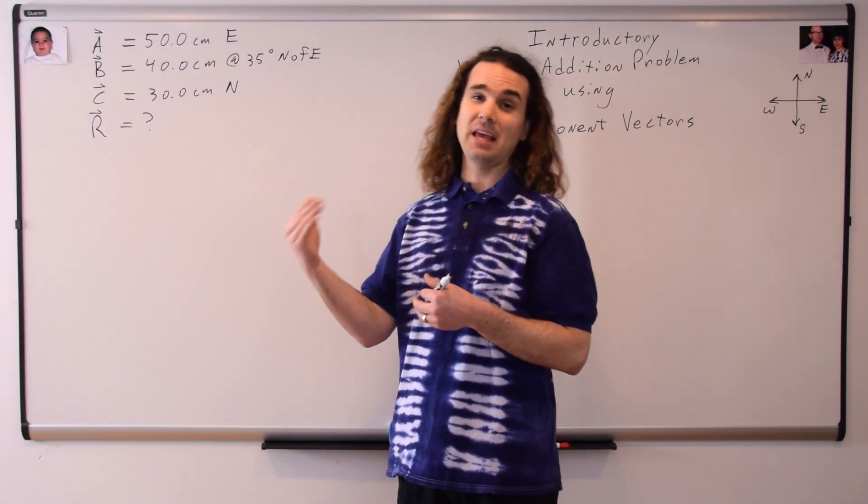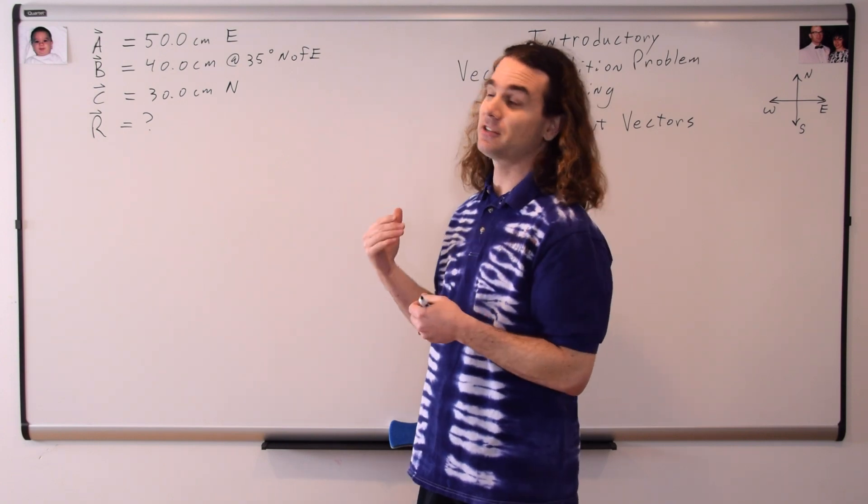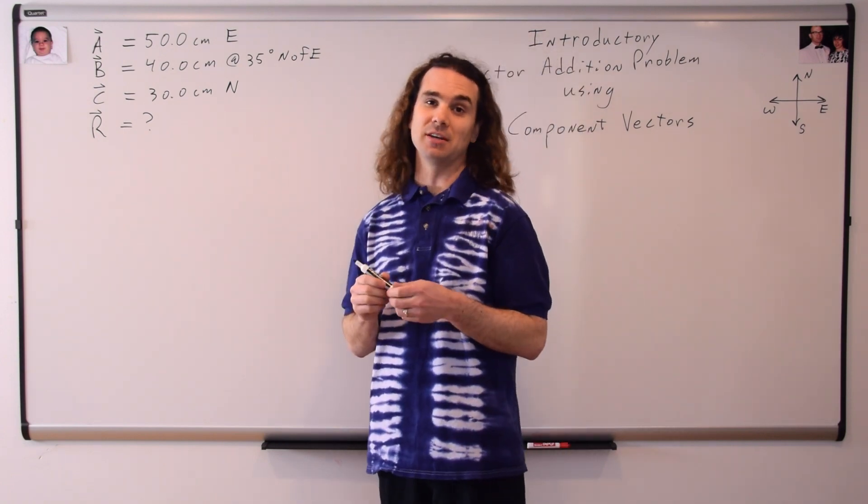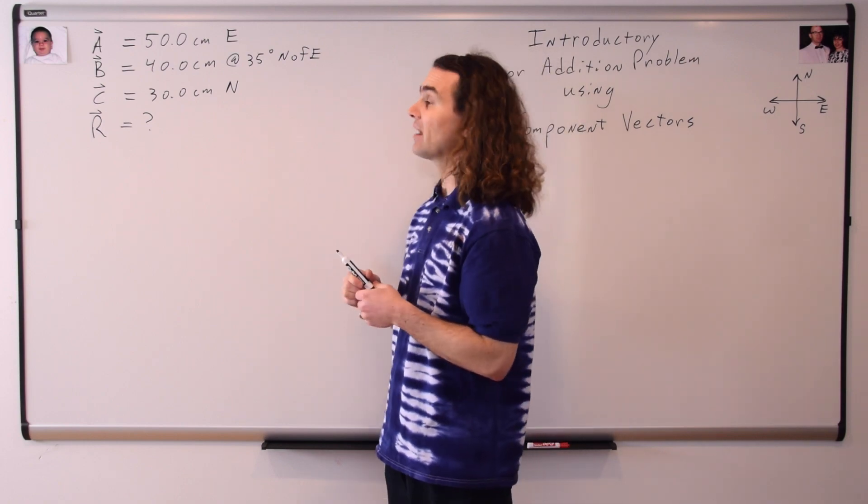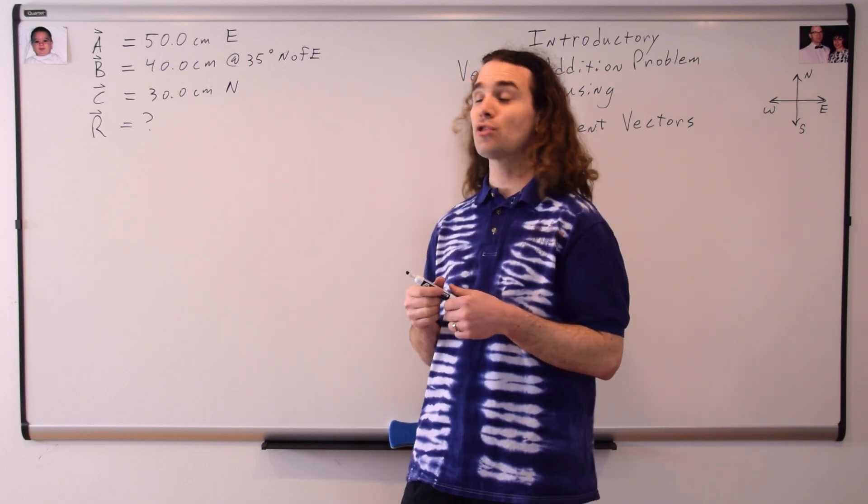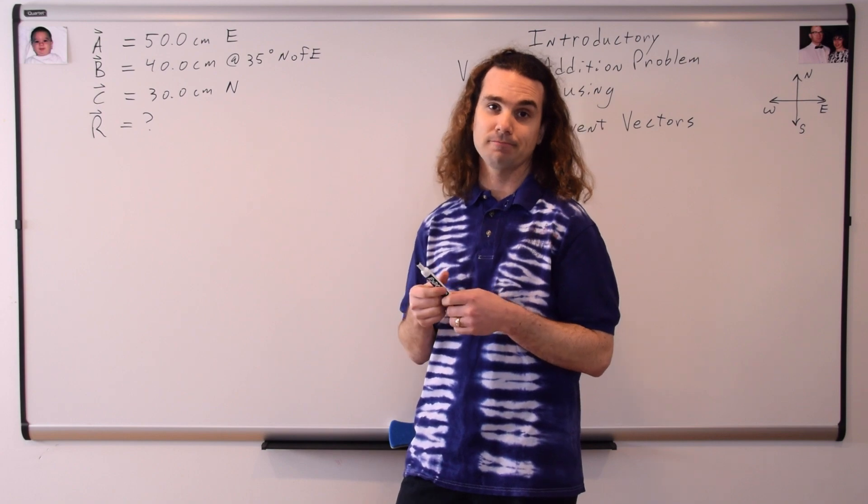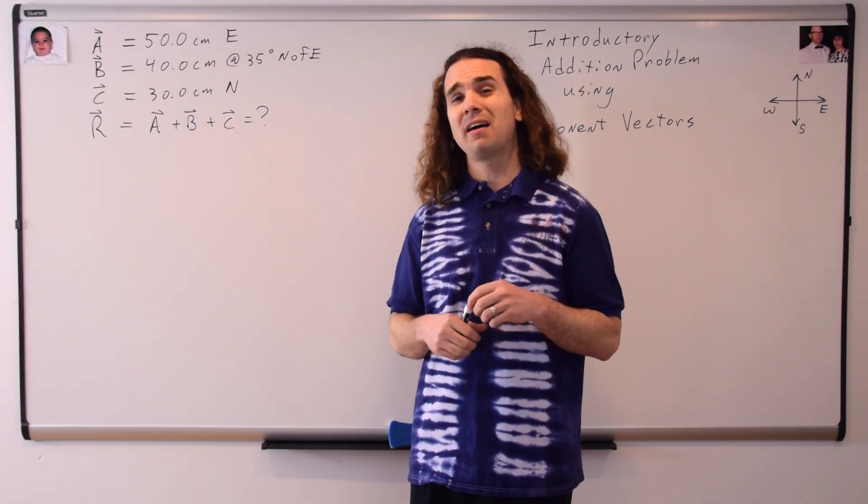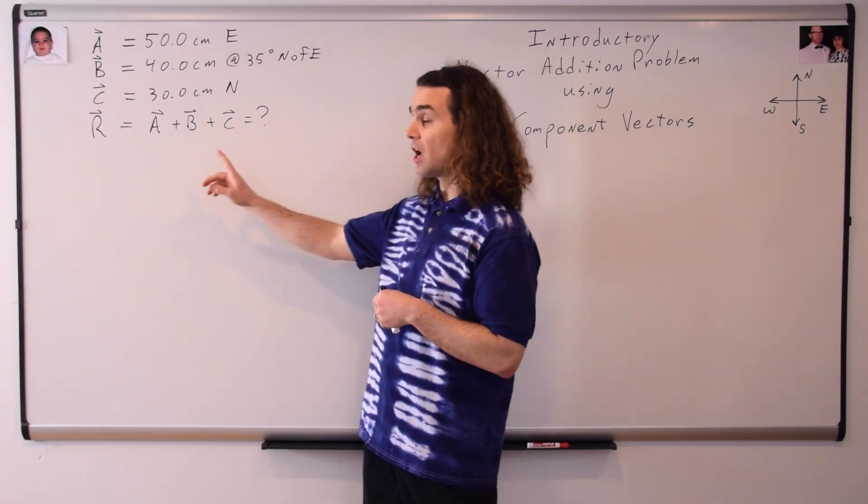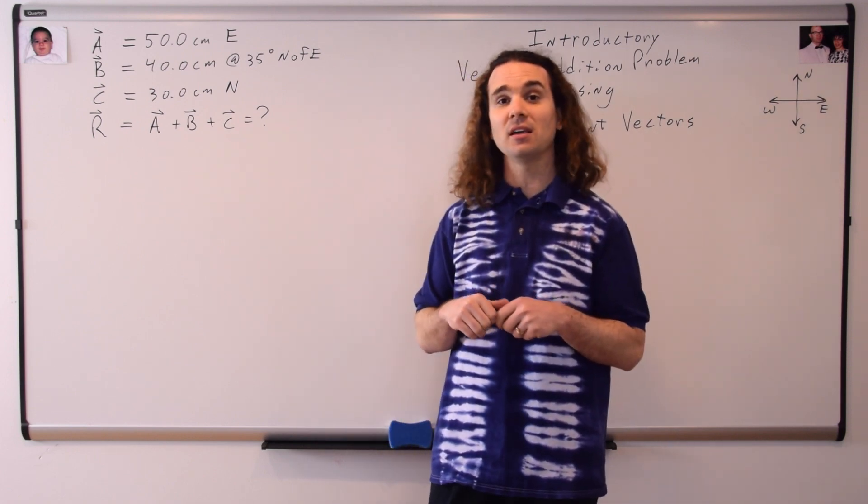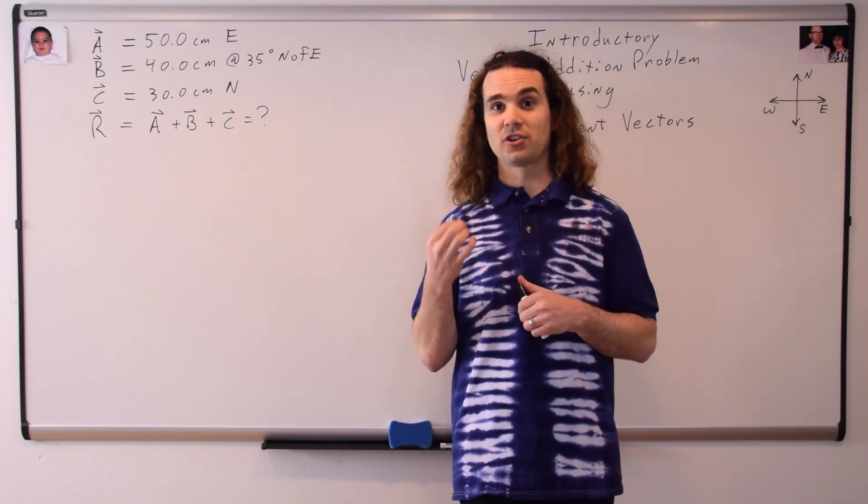I have named the vectors A, B, and C. Vector A is 50.0 centimeters east. Vector B is 40.0 centimeters at an angle of 35 degrees north of east. And vector C is 30.0 centimeters north. We are trying to find the total displacement for Slow Velocity Racer, which works out to be the sum of the three vectors A, B, and C, which is the resultant vector R.